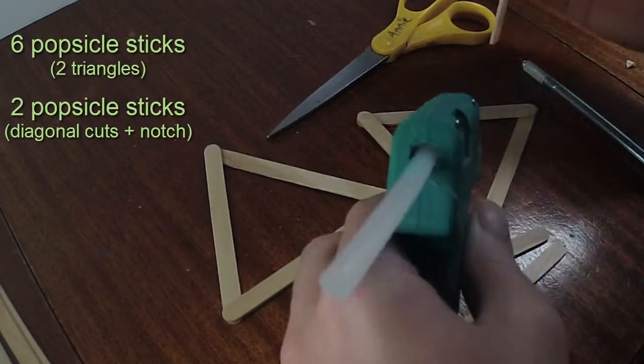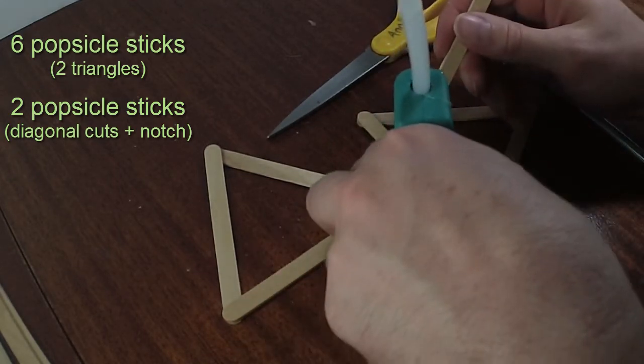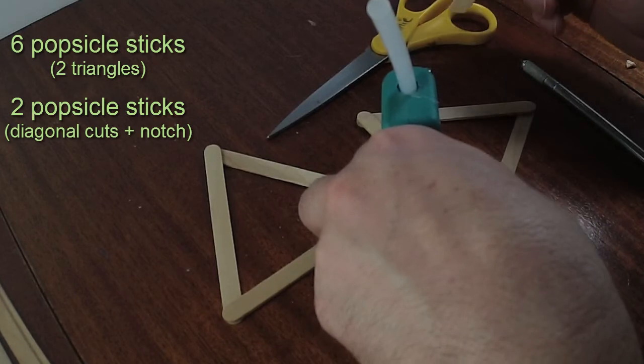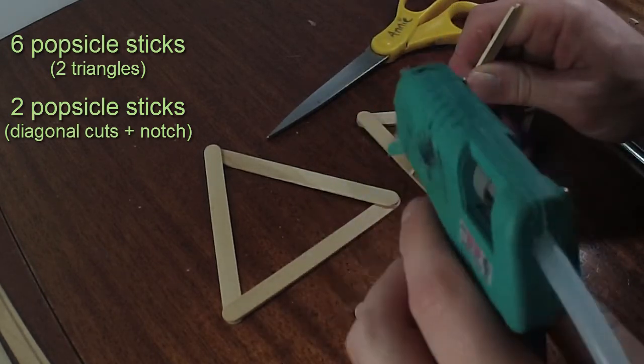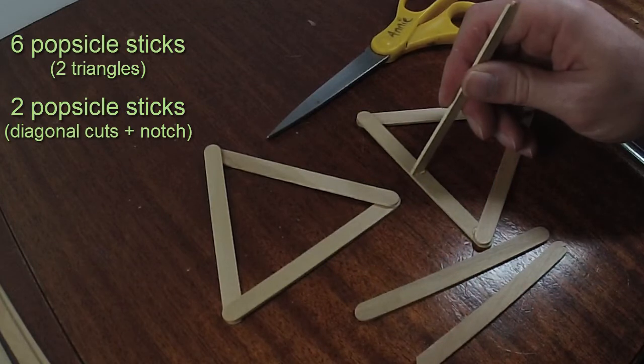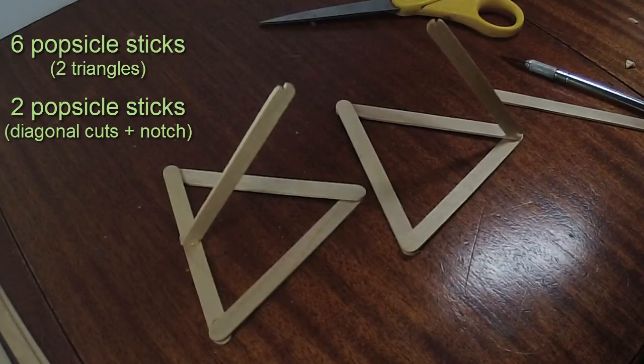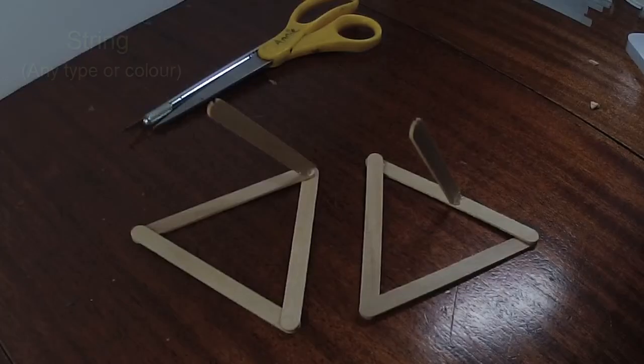So now we're going to take our two angled pieces, and we're going to hot glue them. The first one I want to glue into the middle of one side of the triangle, and the other one will be onto the point. This will allow us to connect them, and we're going to connect them with string.